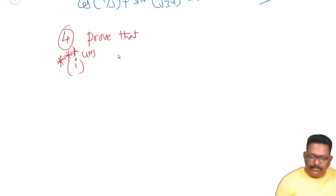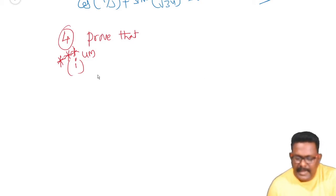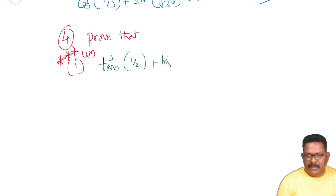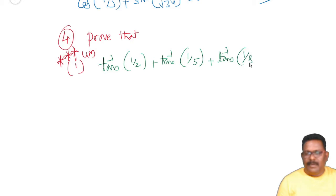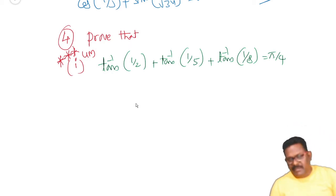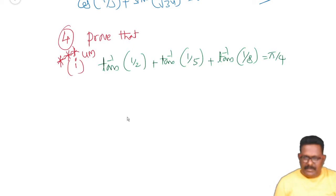First question: tan inverse 1 by 2 plus tan inverse 1 by 5 plus tan inverse 1 by 8 is equal to pi by 4. Prove it.